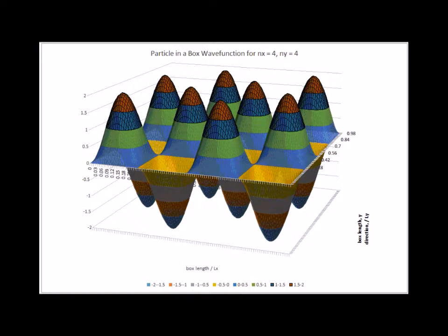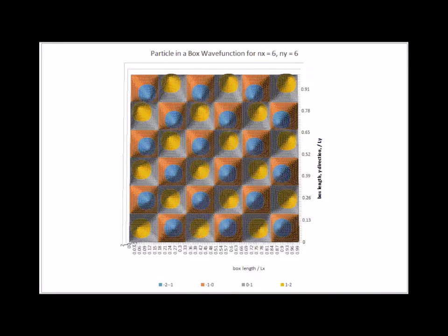Here is the very complicated case for n sub x equals 4 and n sub y equals 4. In each of the x and y direction, there are three nodes. Here we have a slightly different type of graphical representation. The height of the wave function is shown as a distinct color. The blue regions are where the function is a maximum. The yellow, amber color is where the function is a minimum. And you can see the regions around the nodes are shaded in gray.